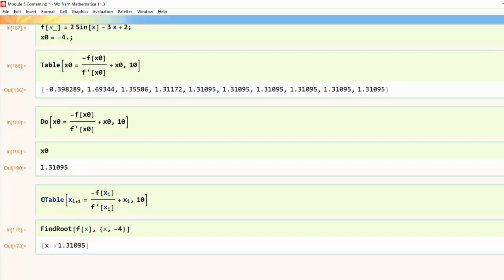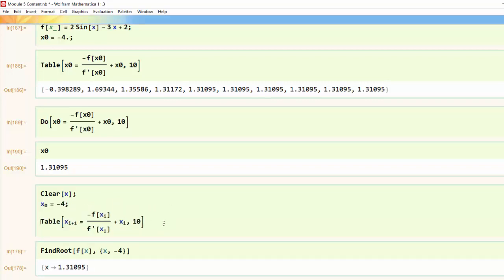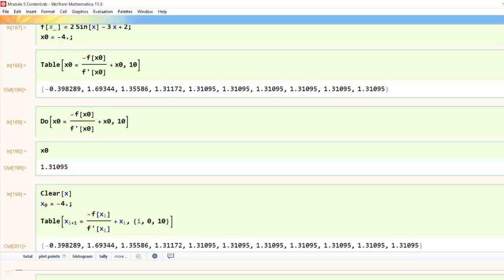and so in this case I'm just going to clear my x in general and then I'm going to initialize by defining x₀ to be -4 like we've been using and now I don't want to run this table 10 times but now I'd rather have i go from zero to we'll say 10 in this case. Now if I hit shift enter we get that same output.